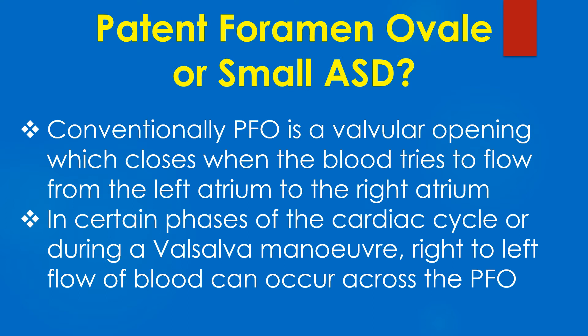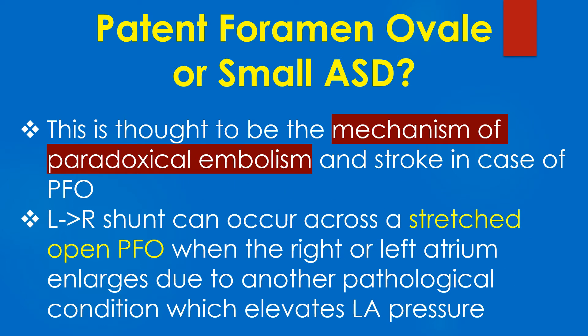In certain phases of the cardiac cycle or during a Valsalva maneuver, right to left flow of blood can occur across a PFO. This is thought to be the mechanism of paradoxical embolism and stroke in the case of PFO.